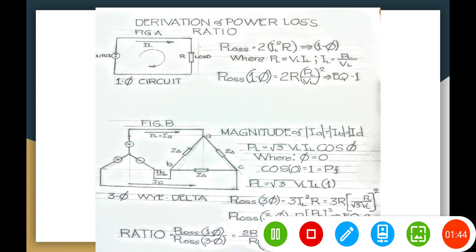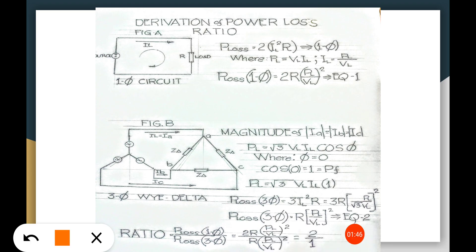Now next is for the three phase system. We have a wye-delta balanced load here, so the derived power loss equation 2 is this one, the R or PL over VL squared, that is equation 2 which is derived from this formula here.